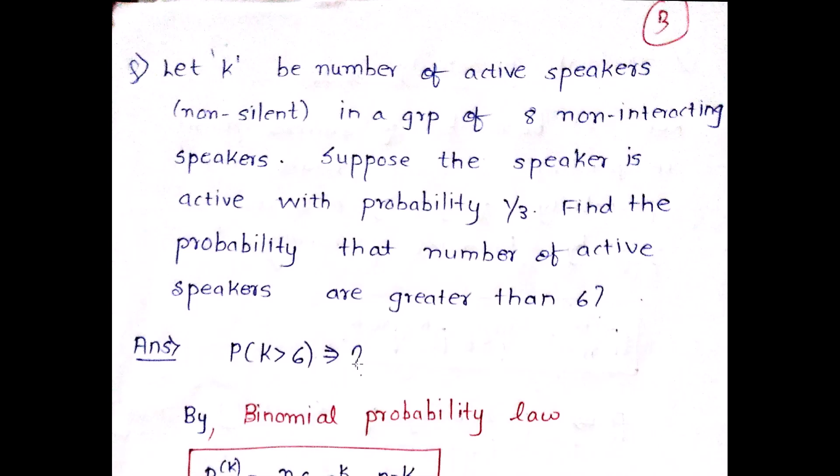So let's read the question. The question says, let k be the number of active speakers in a group of eight non-interacting speakers. So there are eight non-interacting speakers and k is the number of active speakers in them. Suppose the speaker is active with probability 1/3. Find the probability that the number of active speakers are greater than 6.